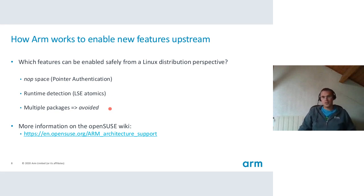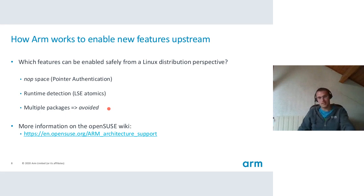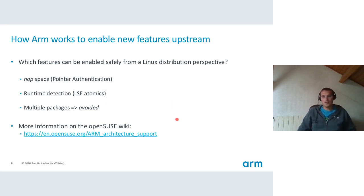A third solution would be to have multiple packages with multiple optimizations for different hardware, but it's avoided most of the time because you will end up with a huge number of different packages, which is not great from a distro point of view. On the OpenSUSE wiki there is a page called ARM Architecture Support, where you can find information about those features and their enablement in OpenSUSE Tumbleweed and OpenSUSE Leap.